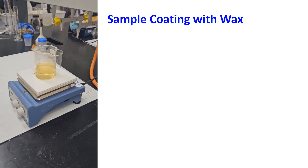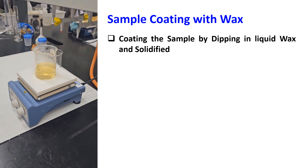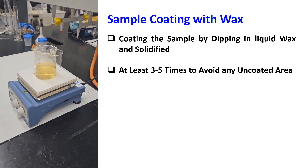We are now coating the sample by dipping in liquid wax and solidifying. Coating the sample by dipping in liquid wax and then solidifying. Coating should be done at least 3 to 5 times to avoid any uncoated area. After each dipping, we need to wait for the wax to solidify on the surface. Temperature of wax should be maintained at an optimum level during coating.